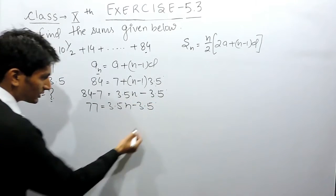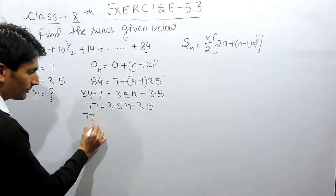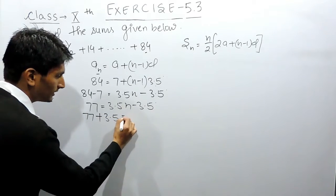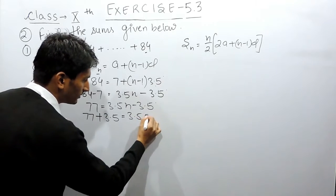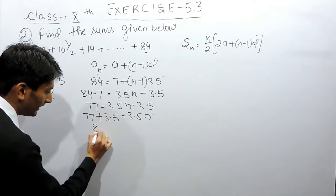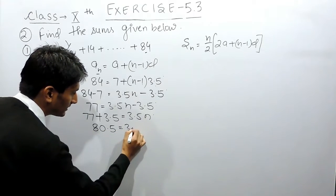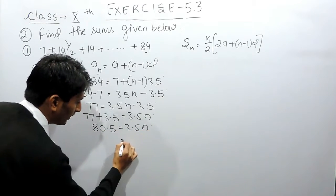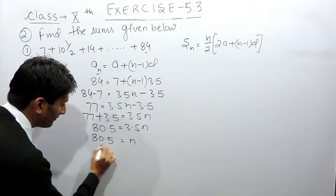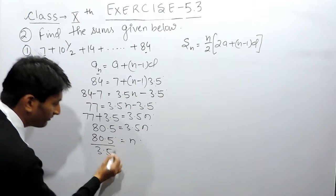Now this constant has to be shifted here, so this will become 77 plus 3.5. This will be 80.5 and this is 3.5n. Now if you want to find the value of n, this will be 80.5 divided by 3.5.